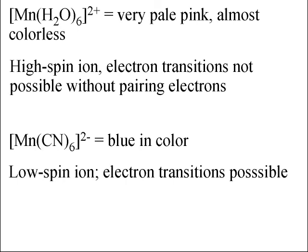The reason the hexaaqua ion is nearly colorless is that it is a high-spin ion and electron transitions are not possible without pairing of electrons. On the other hand, the hexacyanomanganate ion is blue in color because it is a low-spin ion, so electron transitions can occur.